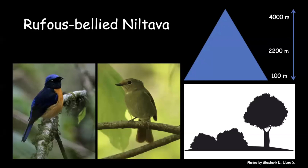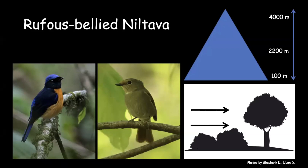The rufous-bellied niltava is another bird that shows a little bit of white on the throat. Males are very distinct with a rufous belly going all the way up. Sometimes people mistake them for vivid niltava, which is not very common. Found in the top-lower to mid-canopy part of the tree.